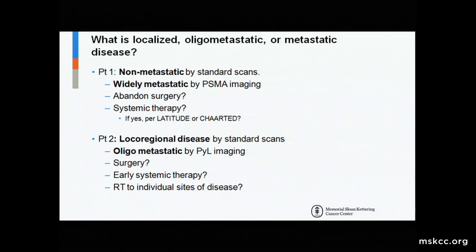These cases illustrate the dilemma we're in now. Both patients have clean scans by standard imaging, but patient one clearly has widely metastatic disease by PSMA imaging. Should we abandon surgery? Should we deliver early systemic therapy, and if so, should we consider him per LATITUDE and CHAARTED as having extensive disease — giving upfront chemotherapy or abiraterone with his ADT? For patient two with oligometastatic disease, since all local regional disease is out, should we irradiate the few bony residual sites? What's the treatment paradigm for patients whose disease is only detectable by novel imaging techniques we didn't previously have?